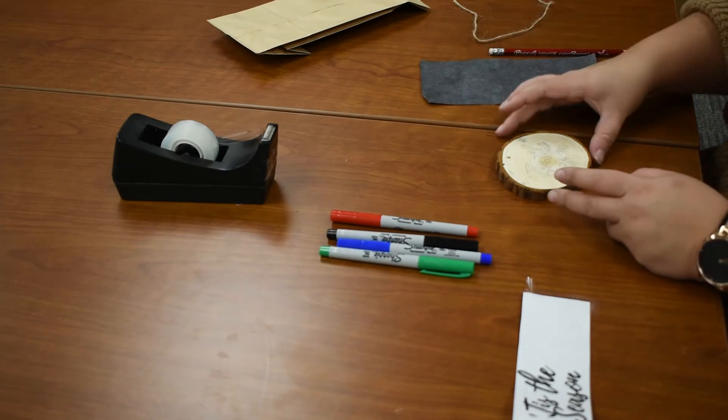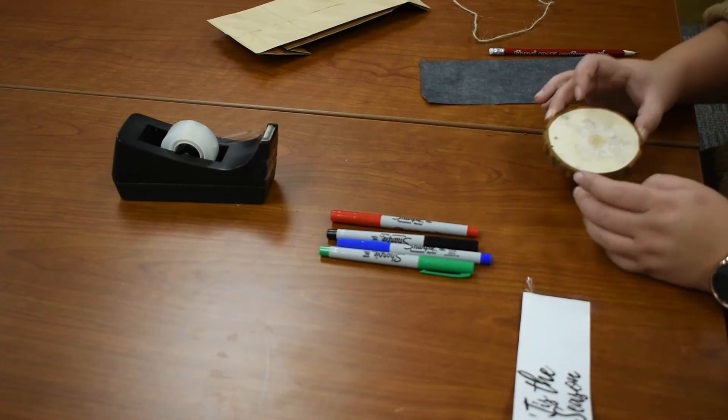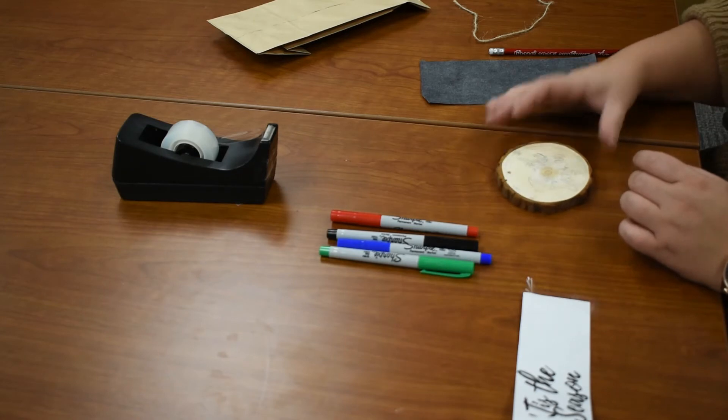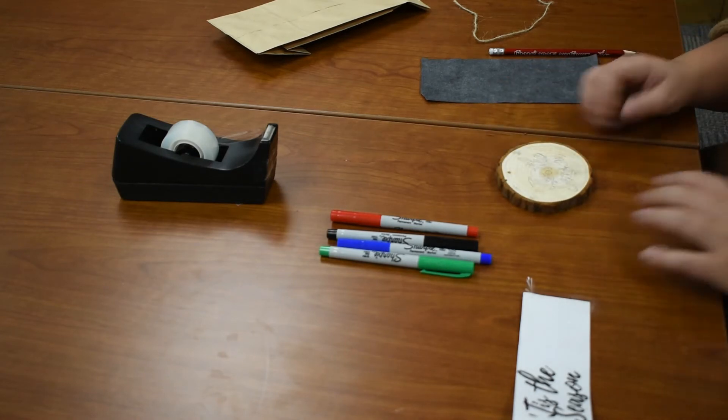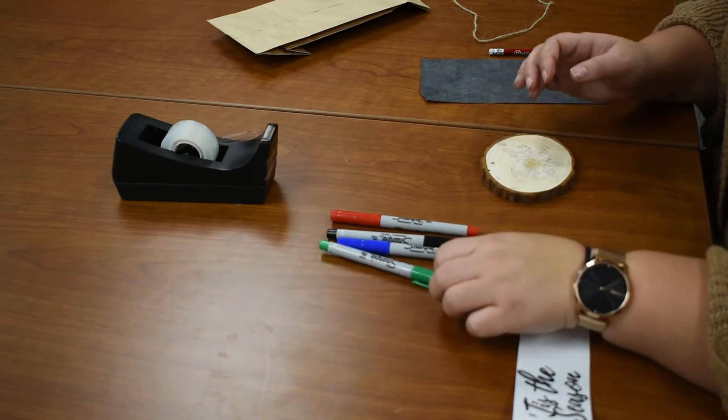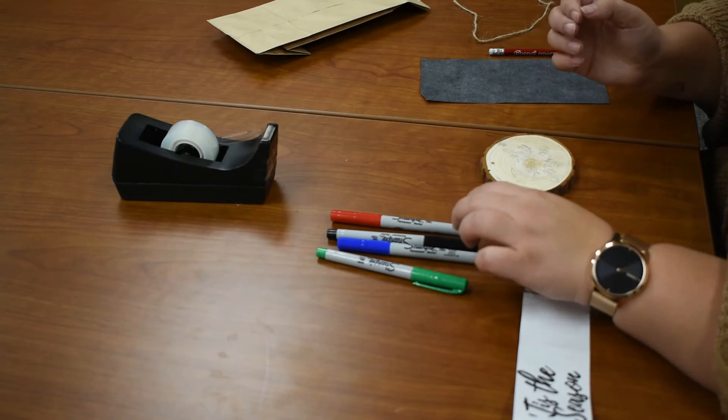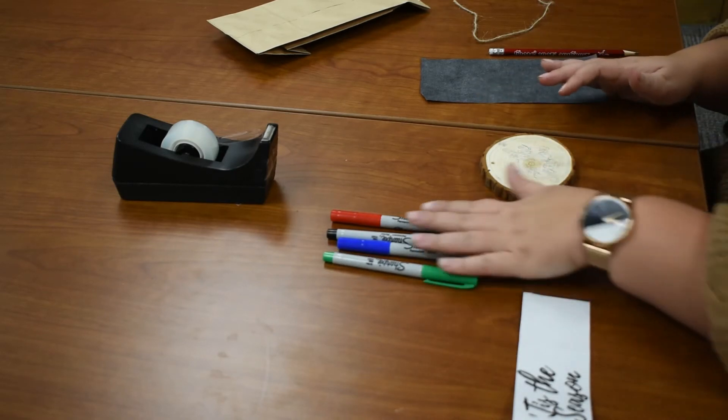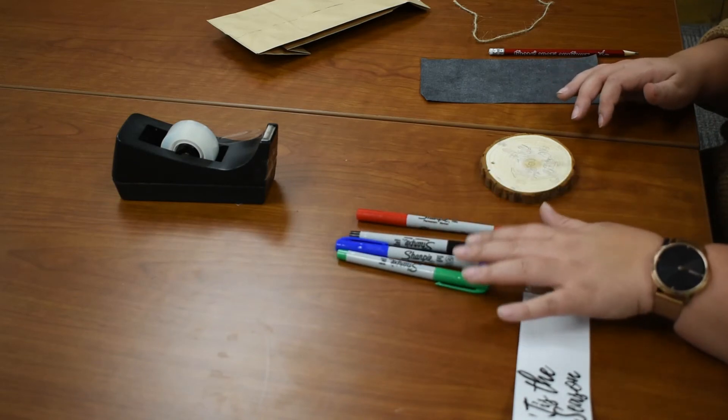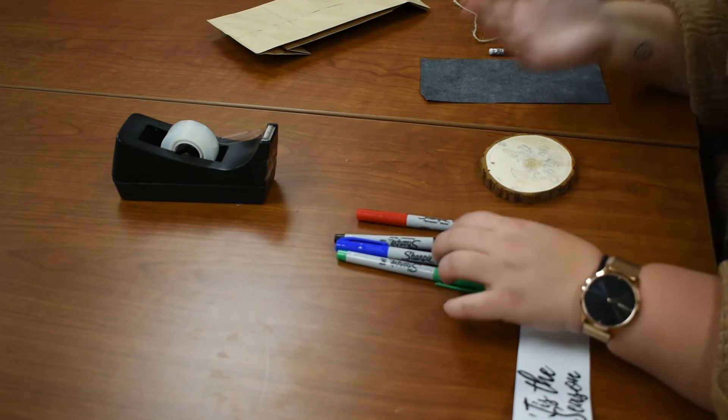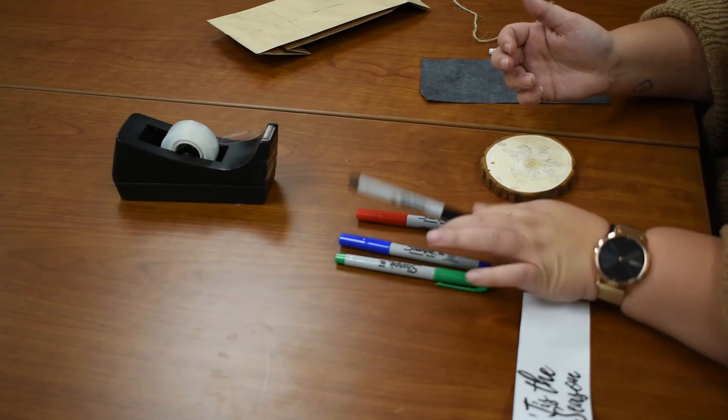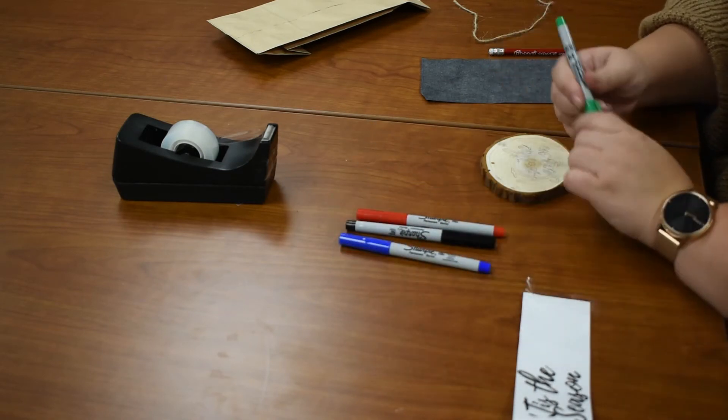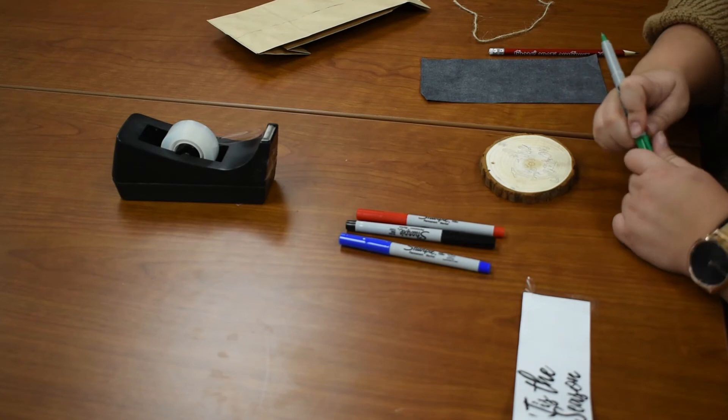It should be transferred right onto your wood piece. I would then fill it in with whatever color you like. I have several different colors that I'll use and then I'll outline it with the black one when I'm done so that it looks pretty seamless.